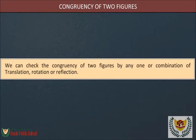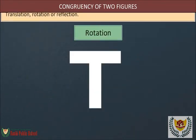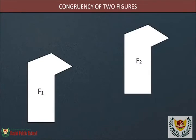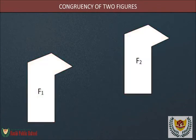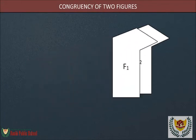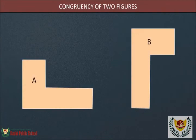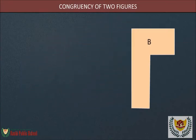The transformations are: translation, rotation, or reflection. Translation means moving without rotation. F1 and F2 are congruent because if we translate F1 to F2, the two figures fit together perfectly. Figures A and B have different orientations, but if we rotate A by 90 degrees and then translate it to B, we find that both cover each other completely.